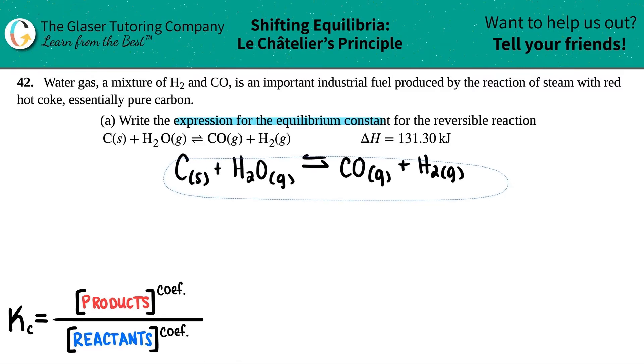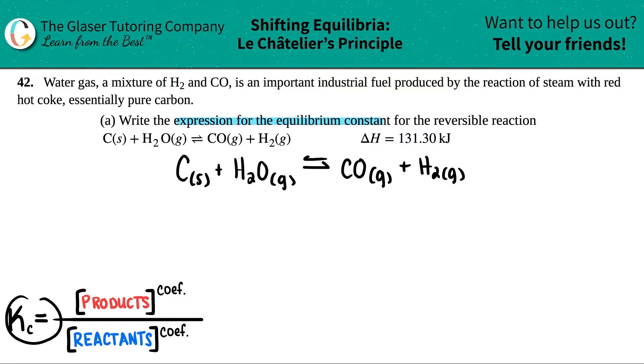So all we have to do is just write the equilibrium constant for letter A. Now remember, I'm assuming that we're going to be doing Kc in this case instead of Kp. They did not state, so I'm just going to keep it as Kc, right? And remember, it's just concentration of products divided by concentration of reactants.